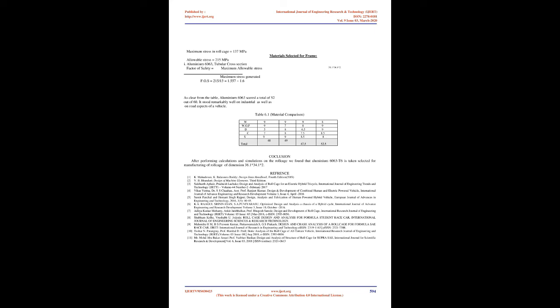Conclusion: After performing calculations and simulations on the roll cage, Aluminium 6063-T6 was selected for manufacturing the roll cage with dimensions 38.1 × 34.1 × 2 mm.